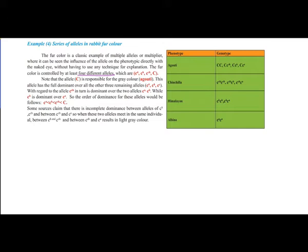The allele with capital C, agouti, is responsible for the gray color and is dominant. This allele has full dominance over all three remaining alleles: albino, Himalayan, and chinchilla.